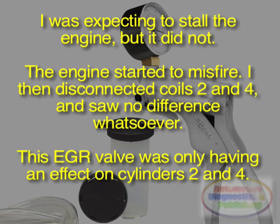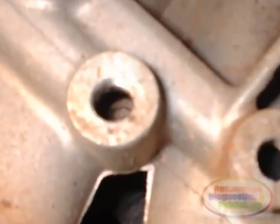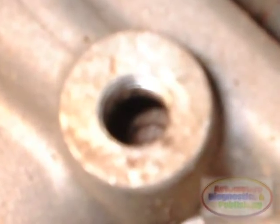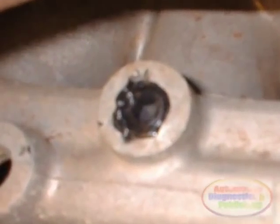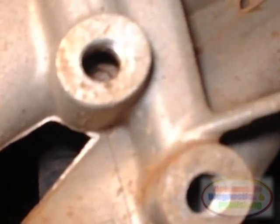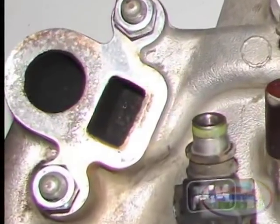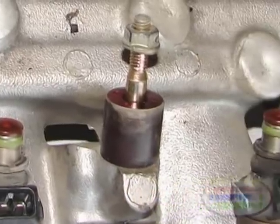This EGR valve was only having an effect on cylinders 2 and 4. After researching the issue on the web and my database, I realized that Hondas have a recurring problem with intake manifold clogging of EGR passages. There's a procedure whereby a hole is drilled at the top of the manifold, then threads are tapped so that a hex plug is used to plug the hole. Through these holes, the intake manifold conduits for the EGR are then cleaned and decarbonized using carburetor cleaner and a snake wire. I then gave the tech a detailed procedure of the repair.